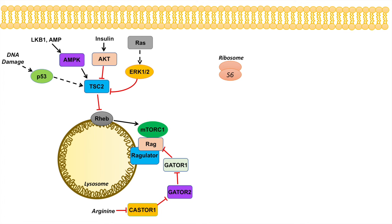Additionally, there is another inhibitor of GATOR2, which is SESTRIN1/2, and SESTRIN1/2 is inhibited by leucine. So leucine is an activator of mTORC1 through its ability to inhibit SESTRIN1/2. If leucine inhibits SESTRIN1/2, then GATOR2 is not inhibited, which means GATOR2 can inhibit GATOR1, which means GATOR1 cannot inhibit RAG, and RAG can activate and bind to mTORC1.